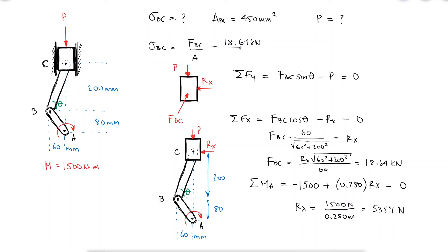With this force and the given cross-section area of rod BC, we find that the normal stress is equal to 41.4 MPa, and because of the direction of FBC, I know this stress is a compressive stress.